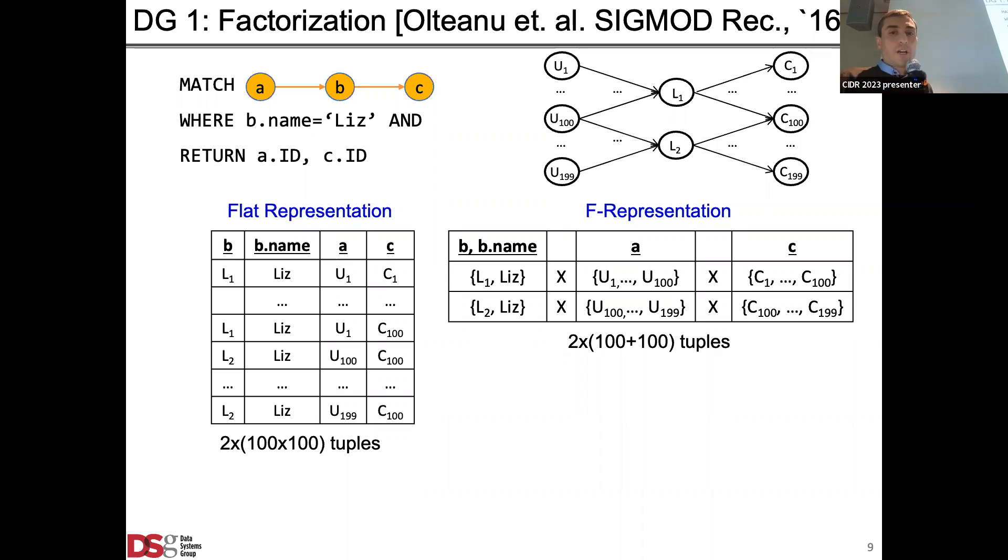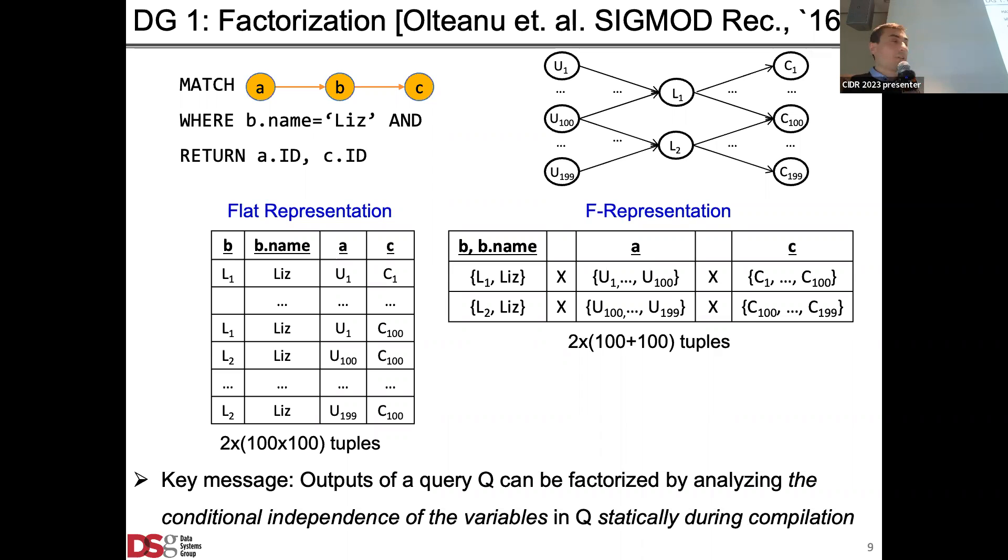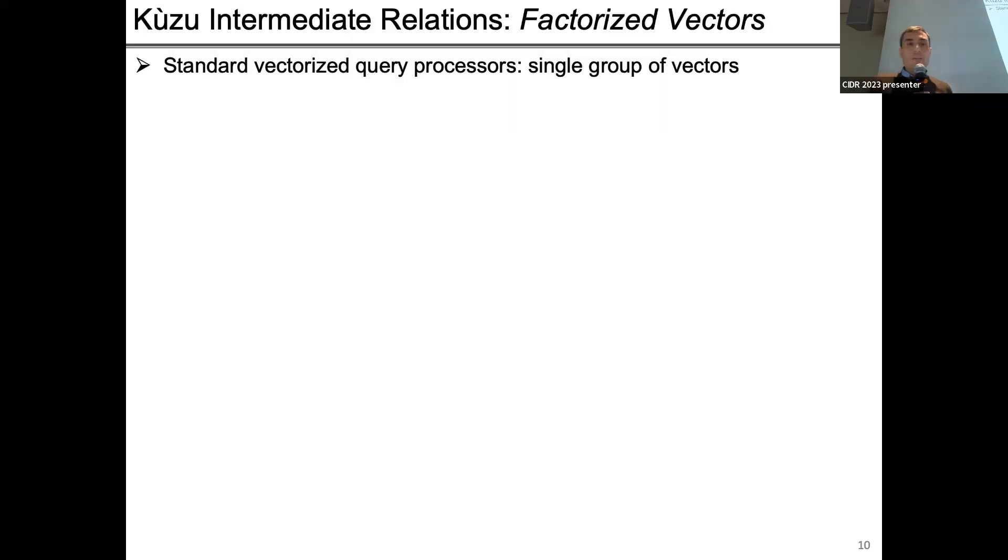Factorization is this idea of essentially representing intermediate relations using unions of Cartesian products. This is a technique pioneered by Dan Olteanu in his series of primarily theoretical papers. Dan has really nailed down the principles of how a system can just look at the query and look at the dependency in the query and exploit conditional independences statically during compilation time to find good factorization structure. I hope it's clear that once b is fixed to a single record L1, all the a's and c's are conditionally independent because there's no dependency between a and c in this two path query.